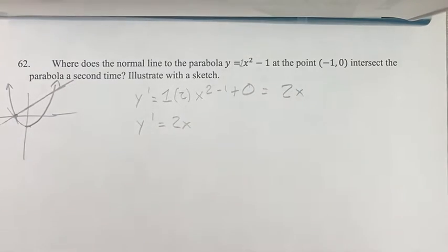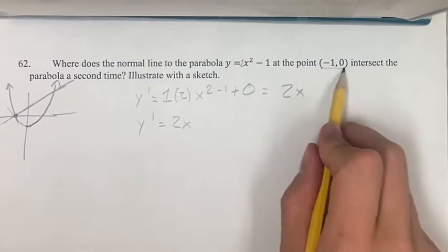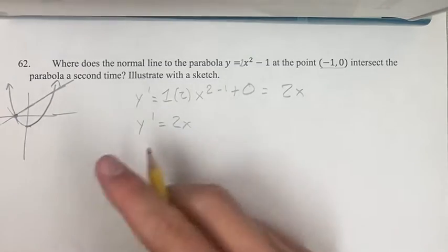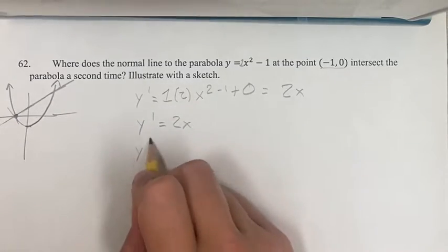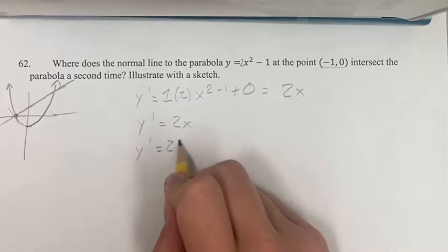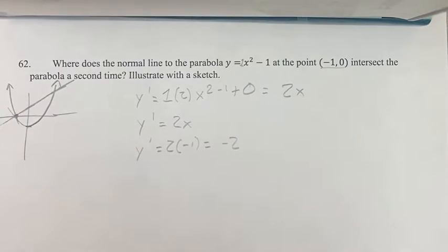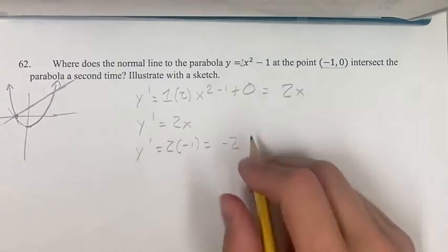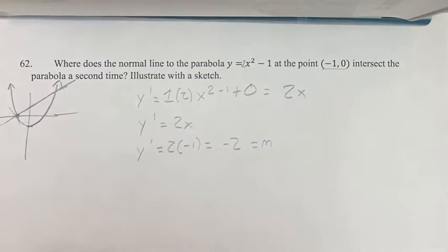Now we're not just looking for the general derivative, we're looking for the derivative at this point. So if we plug in negative 1 for x, y prime is equal to 2 times negative 1 is negative 2. That means the slope of the tangent line is negative 2.